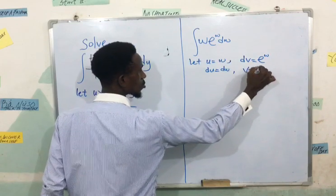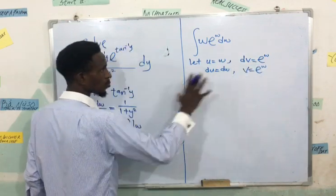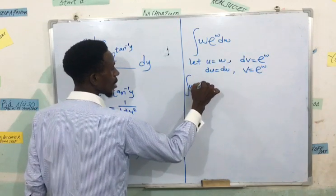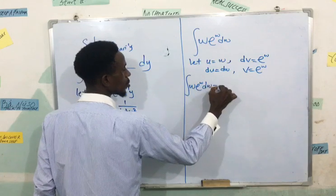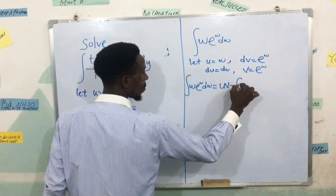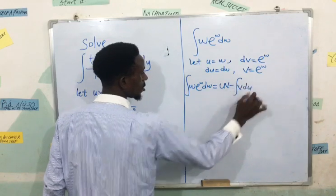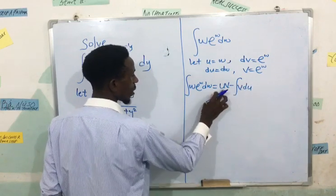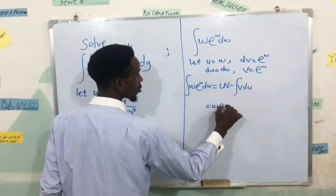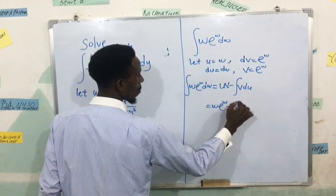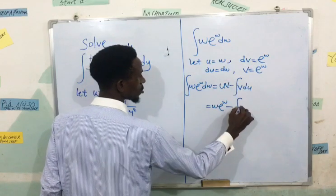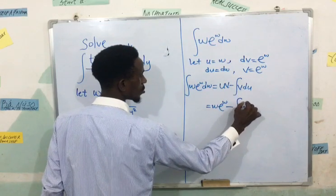So my formula, this now, the integration by parts is going to give me uv minus the integral of v du. So I'm going to have my u here is w, my v here is exponential w, minus the integral, my v exponential w, then my du is dw.